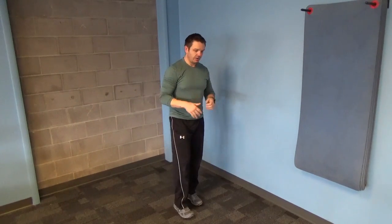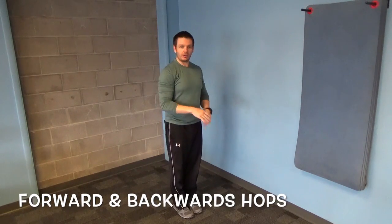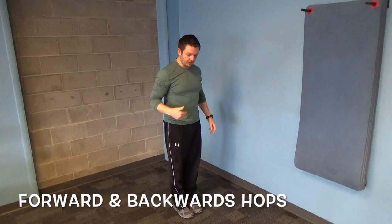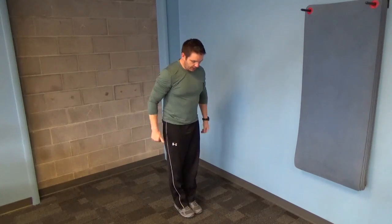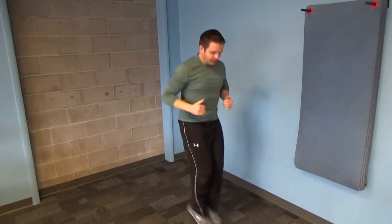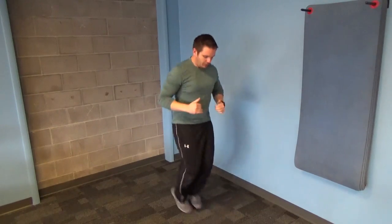Last exercise is called a forward and backwards hop. Very simple. A lot of people like to do this on a carpet or somewhere where there's kind of a line that they have a target that they know they're hopping over and back. Put your feet together, and all you're going to do is hop back for however many repetitions.